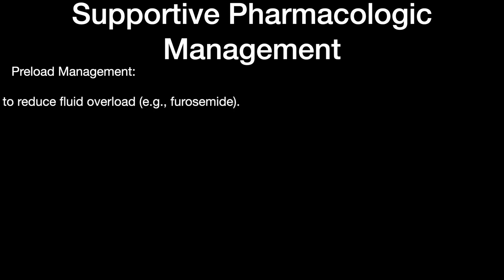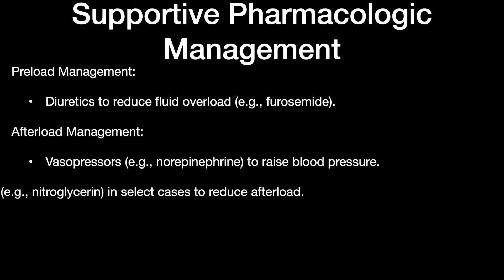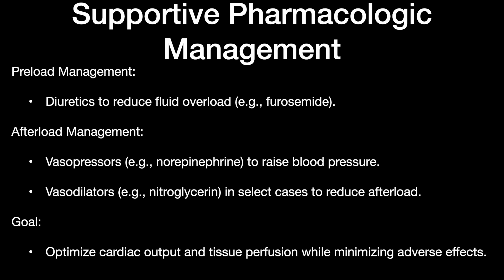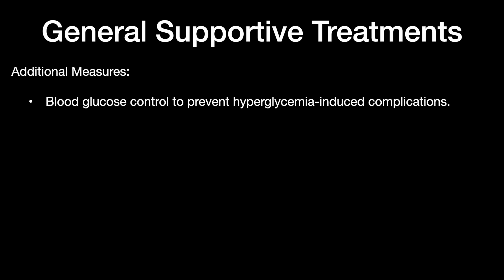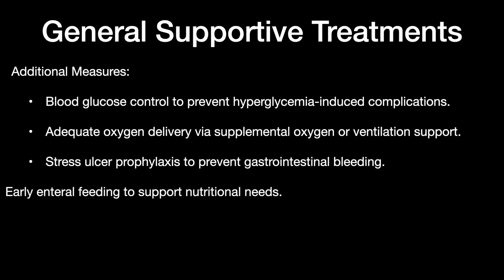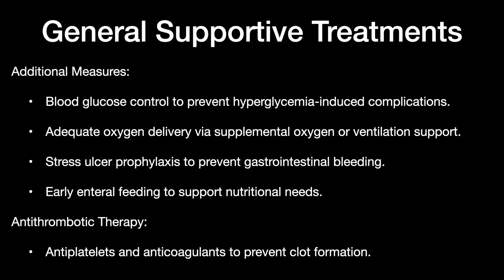In supportive management, reduce preload using furosemide diuretics. Afterload should be titrated with vasopressors and vasodilators as required. The goal is to optimize cardiac output and tissue perfusion while minimizing adverse effects. General supportive care includes blood glucose control to prevent hyperglycemia, adequate oxygen delivery, stress ulcer prophylaxis, early enteral feeding, and antithrombotic agents such as antiplatelets and anticoagulants.